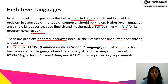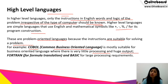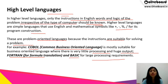For example, COBOL — Common Business Oriented Language — is mostly suitable for business-oriented tasks where there is very little processing and huge output. FORTRAN, which is for formula translation, and BASIC are used for large processing requirements because they need a lot of processing to be done.